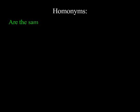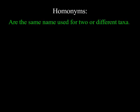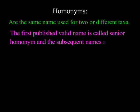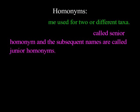Homonyms are the same name used for two or different taxa. The first published valid name is called the senior homonym, and subsequent names are called junior homonyms.